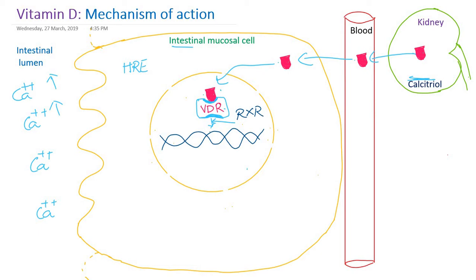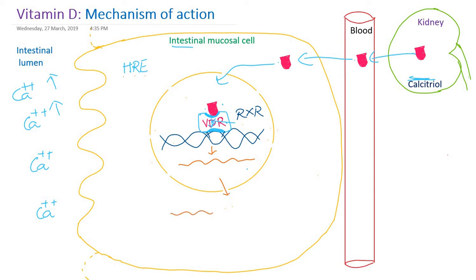The heterodimer of calcitriol-VDR and the retinoic acid X receptor together binds to a certain region in the DNA. This hormone responsive element acts as a transcription factor, binding to the promoter region of a specific gene and initiating transcription — the synthesis of mRNA. This mRNA then exits through the nuclear pore into the cytoplasm.